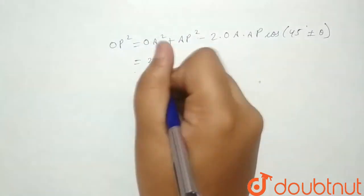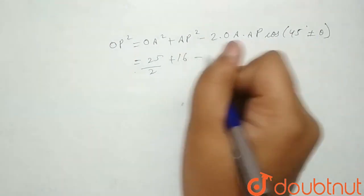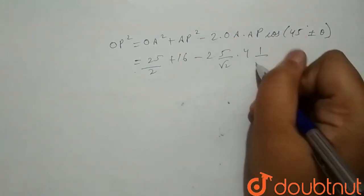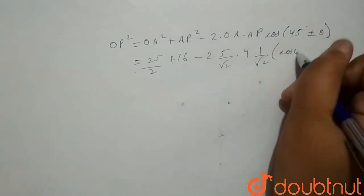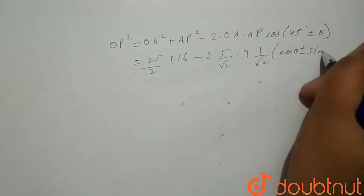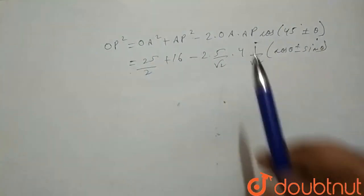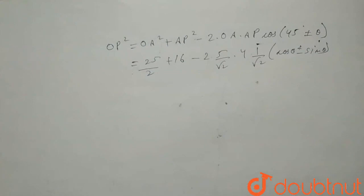So this will be equal to 25 by 2 plus 16 minus 2 times 5 by root 2 times 4 times 1 by root 2, cos theta plus or minus sin theta. You will open this by the identity, and the remaining values we have determined from the question itself.